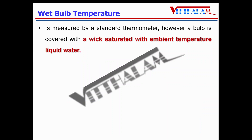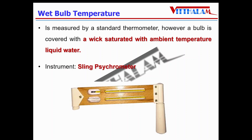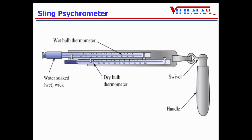Another one is the wet bulb temperature, which is measured by a standard thermometer. However, the bulb is covered with a wick saturated with ambient temperature liquid water. The instrument used to measure wet bulb temperature along with dry bulb temperature is known as a sling psychrometer. It is a very simple device containing two thermometers — one of which is dry and the second one is covered with a wetted wick.